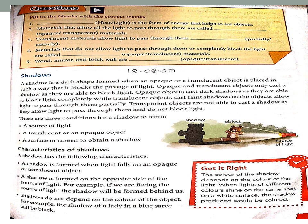It blocks the passage of the light. Now, see the diagram here. The middle one is called an object — it may be an opaque object or it may be a translucent object. When the source of light is passed on that object, the passage of the light is blocked, and a dark shape will be formed.